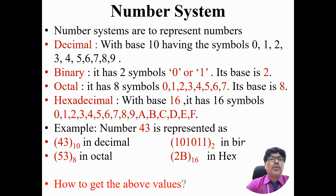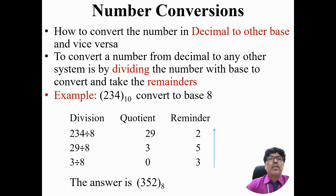Let's look at one example. Take 43 in decimal — that is the value 43. The same value can be represented in other three number systems: 43 in binary is equivalent to 101011, in octal it is 53, and in hexadecimal it is 2B. Now how do you get these values? Let's look at how to convert from decimal to other base systems and vice versa.